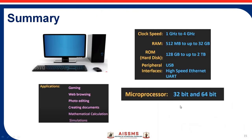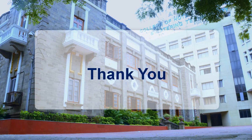This is a summary of today's session. Microprocessors are basically used in laptops and computer systems, and in other devices, microprocessors with microcontrollers are used. Applications include web browsing, photo editing, creating documents, simulation, mathematical calculations, and gaming. Microprocessors are generally 32-bit and 64-bit nowadays, with clock speeds of 1 GHz to 4 GHz, RAM space from 512 MB up to 32 GB, and ROM memory from 128 GB up to 2 TB. Thank you.